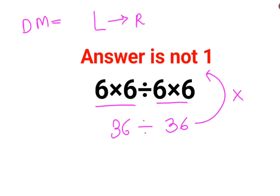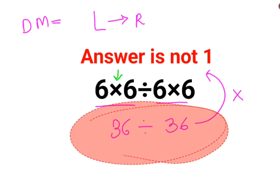Whatever operation happens first on your left hand side has to be done first. So we will first do 6 multiplied by... let me just erase this to remove the confusion.